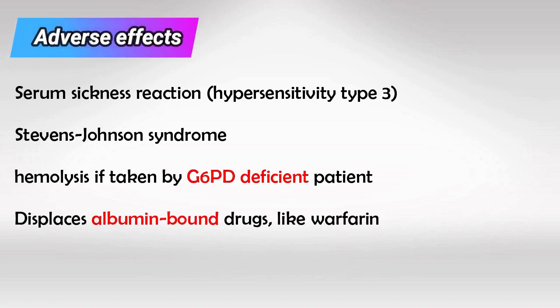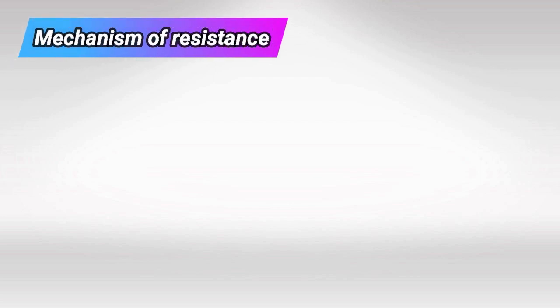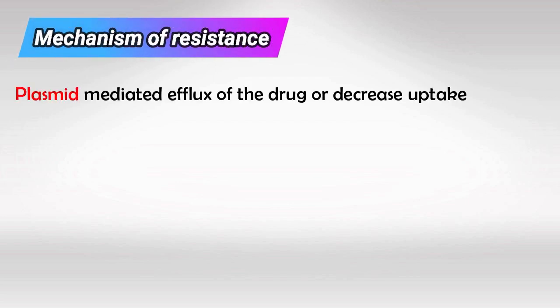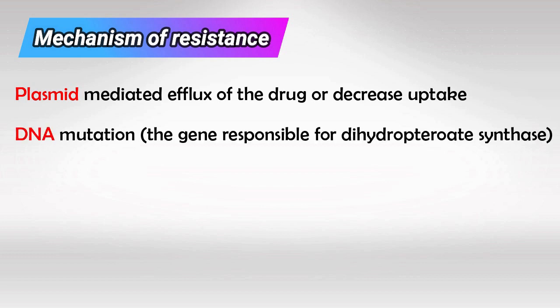Sulfonamides can cause serum sickness reaction, which is hypersensitivity type 3, Stevens-Johnson syndrome, G6PD deficiency hemolytic anemia, and they can displace albumin-bound drugs like warfarin. There are three ways bacteria can resist sulfonamides: plasmid-mediated efflux of the drug — exactly like tetracyclines — mutation of the synthase enzyme, or simply increasing PABA.